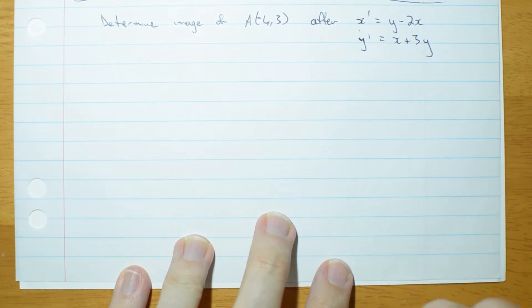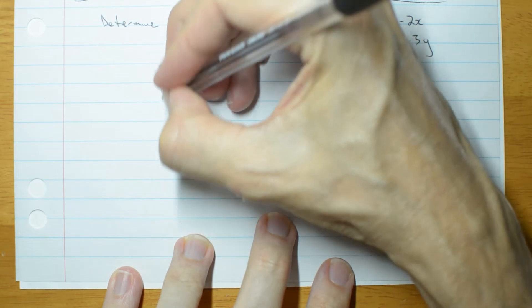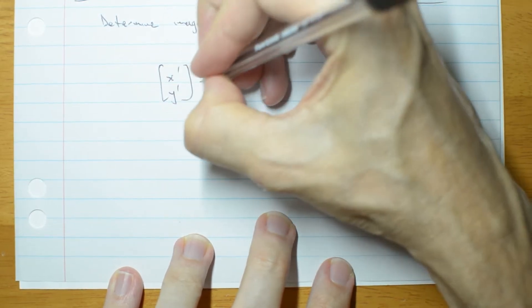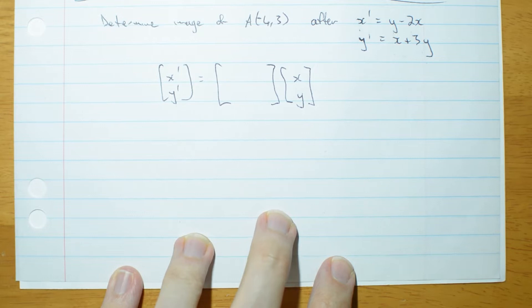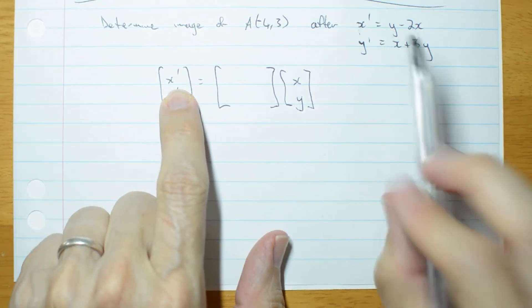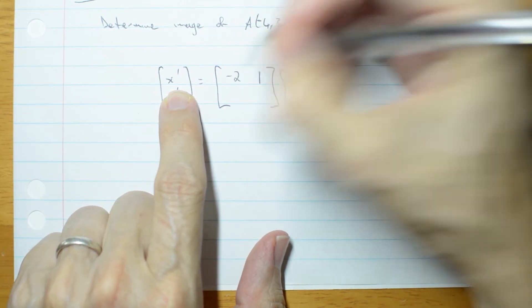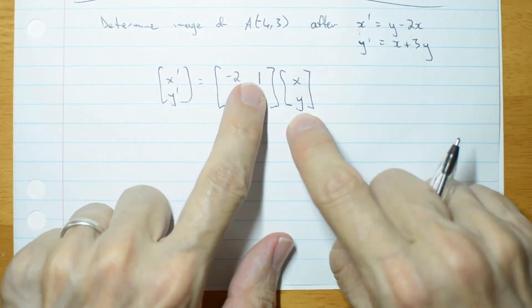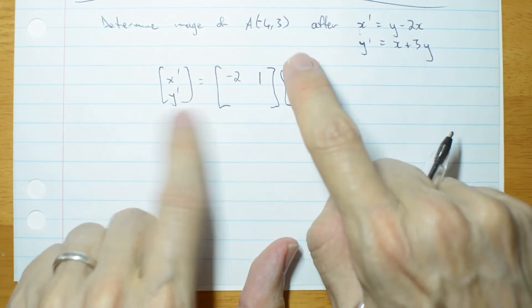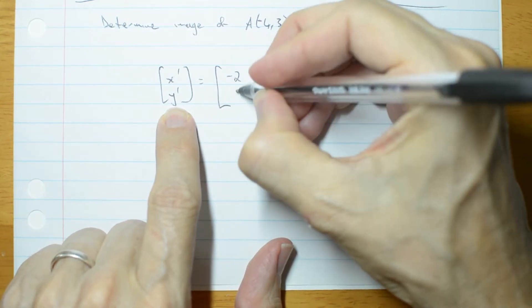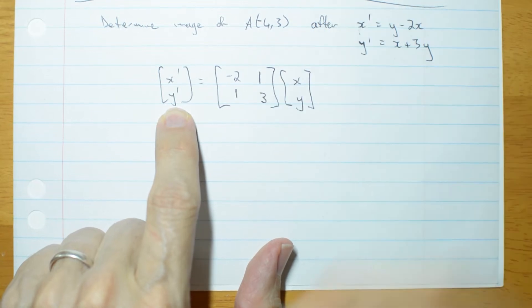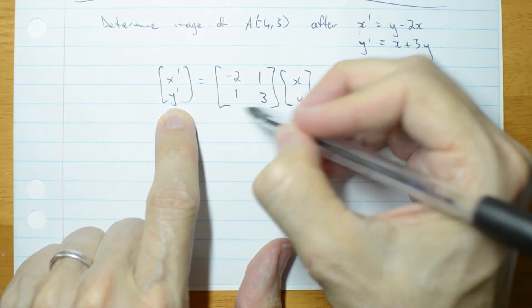Now we're going to do this with a matrix method. I could just substitute in, but I want to show you how to do it with a matrix. So we write our matrix transformation equation. x prime y prime is something times the old xy. Well x prime is 1y minus 2x, and y prime is going to be 1x plus 3y. So this is my transformation matrix.